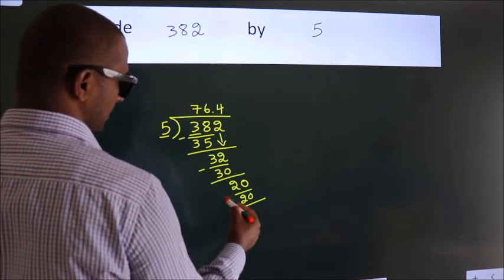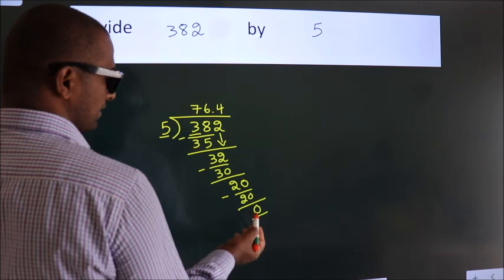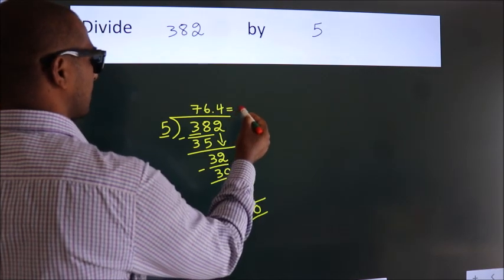Now we subtract. We get 0. We got remainder 0, so this is our quotient.